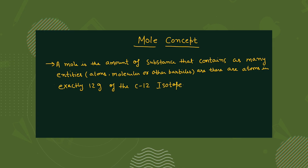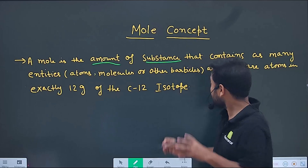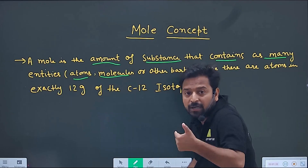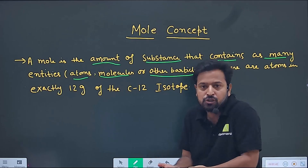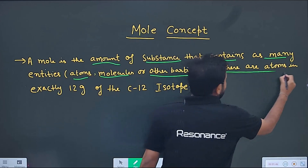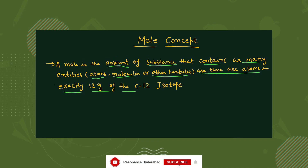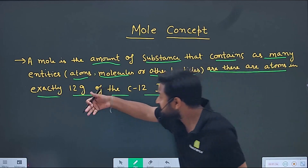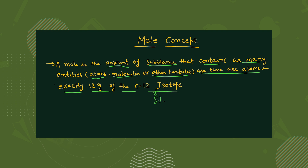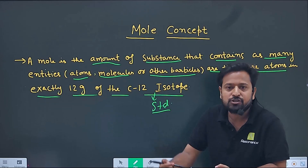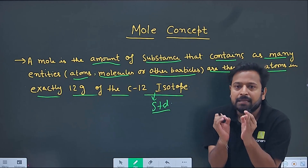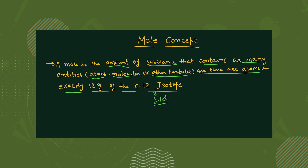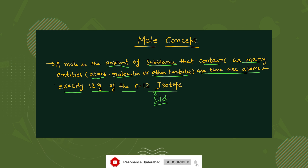By the help of the mole, we can exactly tell how many water molecules are present in a glass of water. The standard definition says: a mole is the amount of substance that contains as many entities — entities could be atoms, molecules (like in case of water), or other particles like ions, electrons, protons, neutrons — as there are atoms in exactly 12 grams of the carbon-12 isotope. Carbon-12 isotope is taken as a standard because in it we get exactly 6.022 × 10²³ atoms.